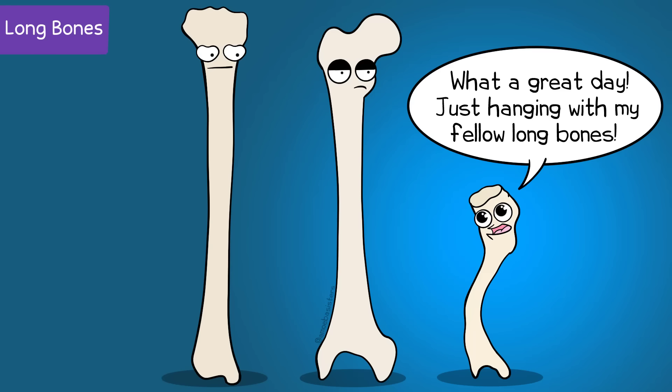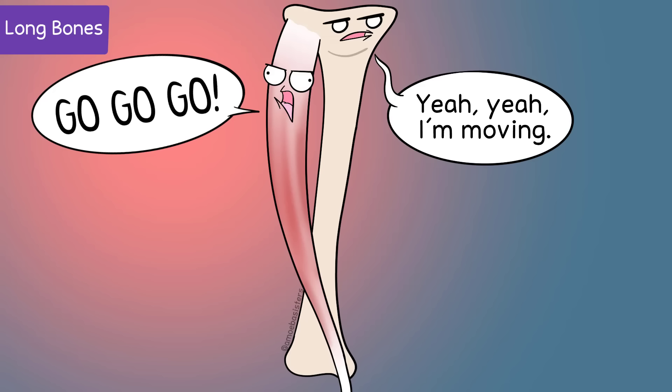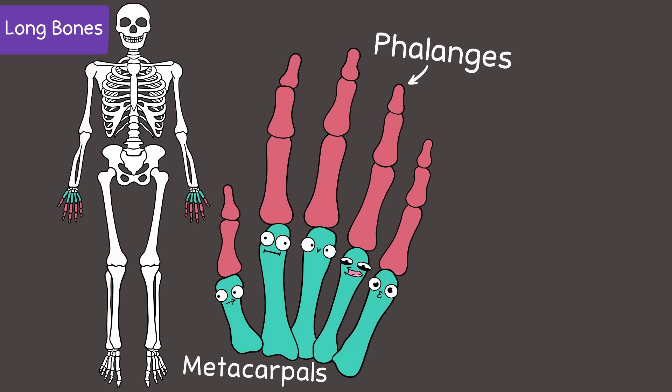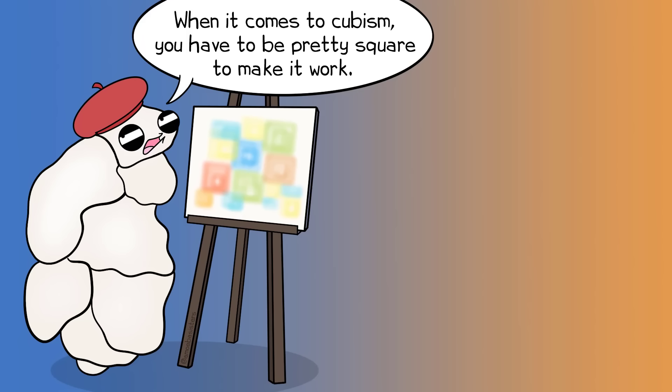Bone shape can be used to classify bones. Long bones are defined not necessarily by their length alone, but by their cylinder shape and the fact that they are longer than they are wide. These bones tend to be moved in muscle contraction. Examples include the femur, tibia, and fibula in the legs, and the humerus, ulna, and radius in the arms. In the hands, metacarpals and phalanges; in the feet, metatarsals and phalanges.